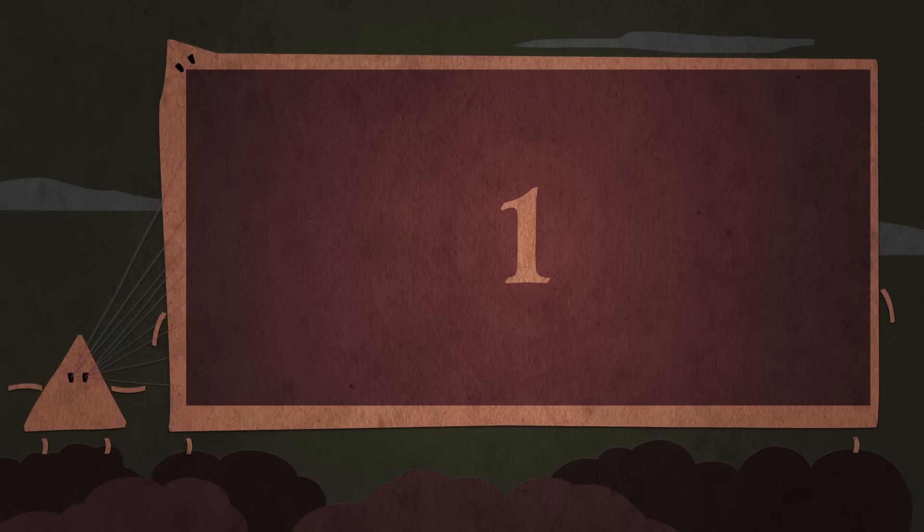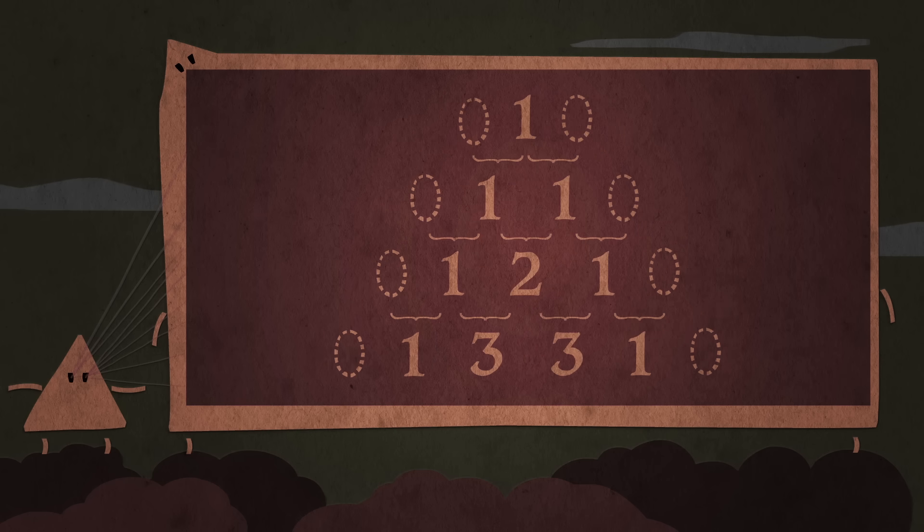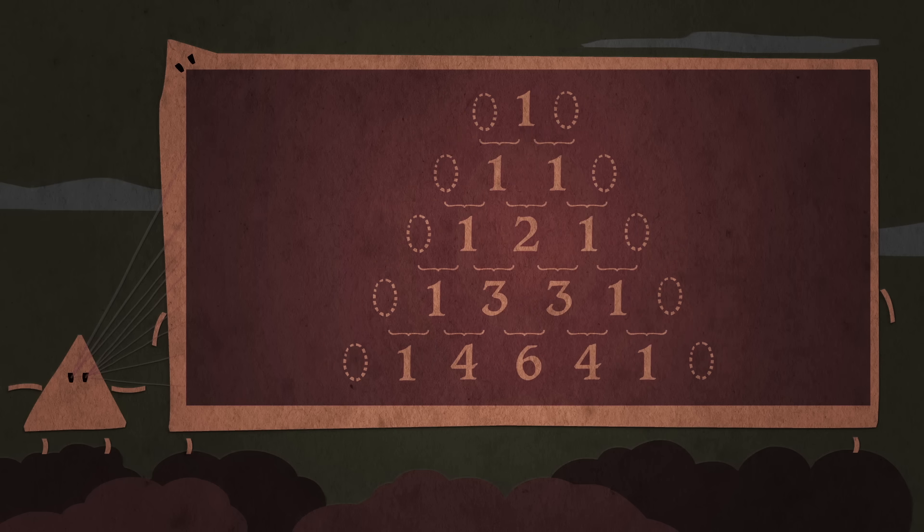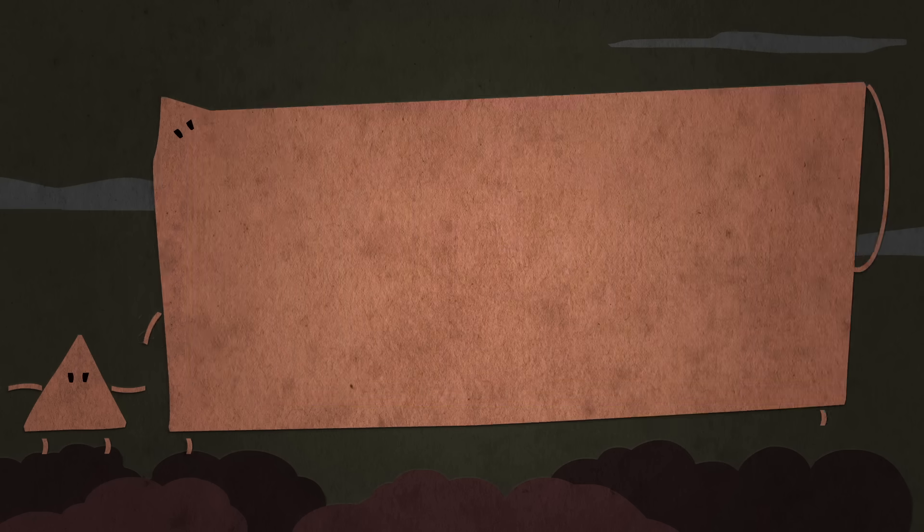Start with one, and imagine invisible zeros on either side of it. Add them together in pairs, and you'll generate the next row. Now do that again, and again. Keep going, and you'll wind up with something like this. Though really, Pascal's Triangle goes on infinitely.